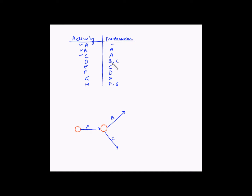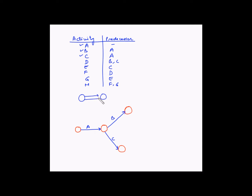Activity D is dependent on both B and C. Now let us draw the ending events for B and C. D is dependent on the completion of B and C, and B and C are emerging from the same event. So if we draw something where B and C are starting and ending on the same events, we will be out of compliance with the network diagramming guidelines. So we can't do this.